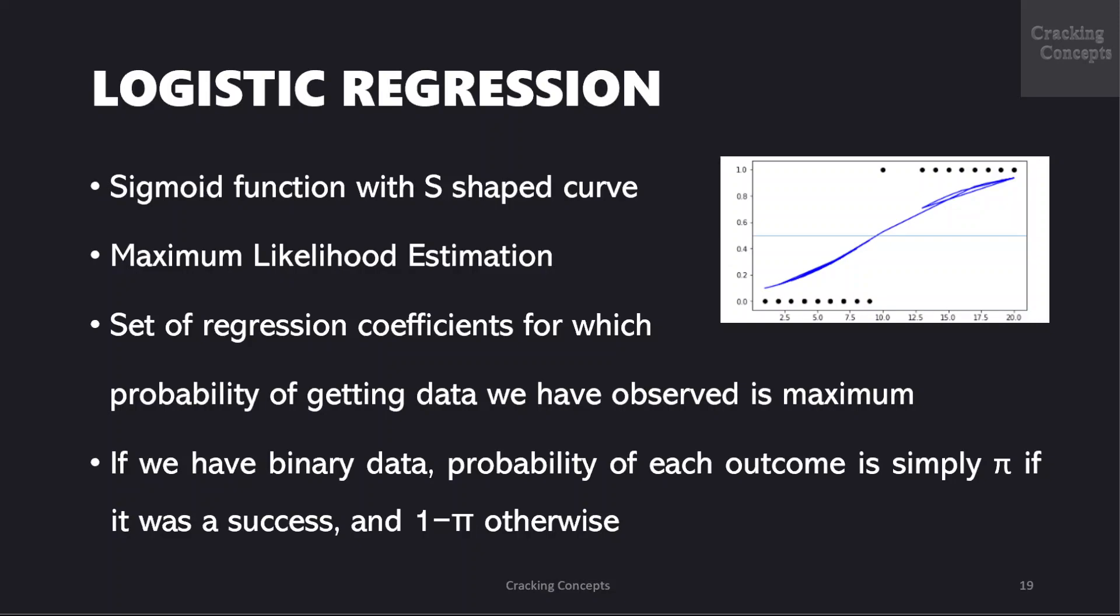Now unlike linear regression model that uses ordinary least square for parameter estimation, we will use a maximum likelihood estimation case here. The maximum likelihood estimate is that set of regression coefficients for which the probability of getting the data we have observed is maximum. So if we have binary data, the probability of each outcome is simply pi if it was a success and 1 minus pi other case. We have already seen maximum likelihood estimation and its example problems in one of the previous videos.